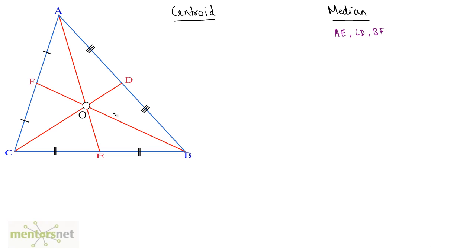A median is a line joining the vertex and the midpoint of the opposite side. E is the midpoint of BC because CE and EB are equal. The same is the case with median BF — F is the midpoint of AC, so the line from B to F is a median. Similarly for CD. A median joins a vertex of a triangle to the midpoint of its opposite side.